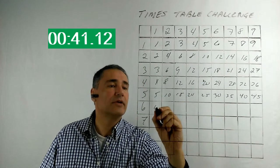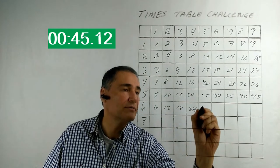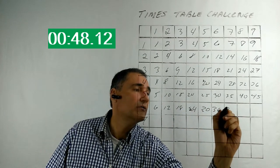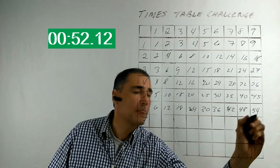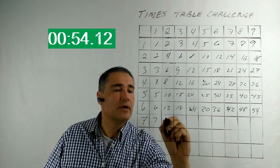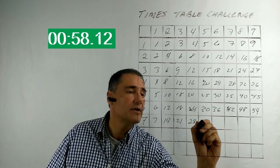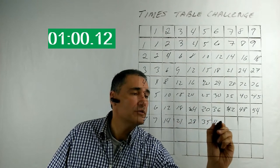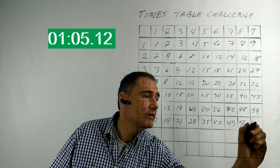He continues with sixes: 6, 12, 18, 24, 30, 36, 42, 48, and 54. Then the sevens: 7, 14, 21, 28. He notes 7 times 5 is 35, then continues: 42, 49, 56, and 63.